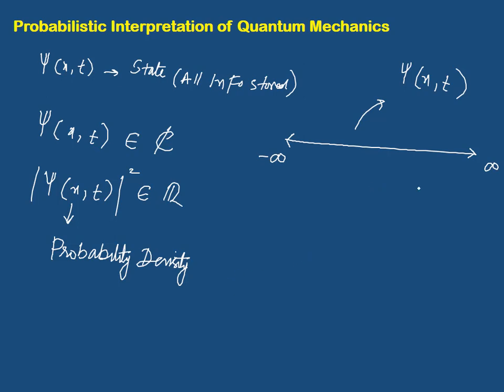Now, if a particle exists somewhere from minus infinity to plus infinity, what should be its total probability of being in that space? By common sense it is 100%, because the particle has to exist somewhere — we just don't know exactly where it is located. We can say the particle is somewhere from minus infinity to plus infinity, so the total probability of finding the particle from minus infinity to plus infinity is 1, or 100%. The maximum probability is 1, and the wave function is smeared out over this space.